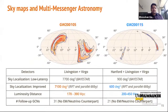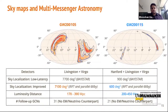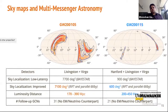We show sky maps for both events. For GW200105, a two-detector event, sky localization is not great and the 90% confidence sky area is more than 7,000 square degrees, though this event is slightly closer at 170 to 390 megaparsecs. For GW200115, seen by all three detectors, our best sky localization is 600 square degrees, though the event is slightly further at 200 to 450 megaparsecs. Follow-up GCNs reported various observations, but unfortunately no electromagnetic or neutrino counterpart has been detected for either NSBH event.